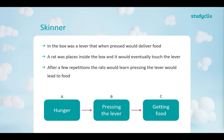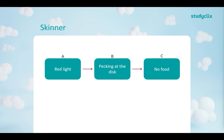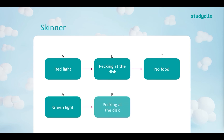Skinner also did experiments on pigeons. When a red light was present — the antecedent — and the bird pecked at a disc in the box, they would get no food. However, if the light was green and they pecked at the disc, they would get food. There are two different antecedents, the same behavior, but different consequences. The bird eventually learned that the red light meant no food, but as soon as the light was green they would get food, so they only pecked at the disc when the light was green.